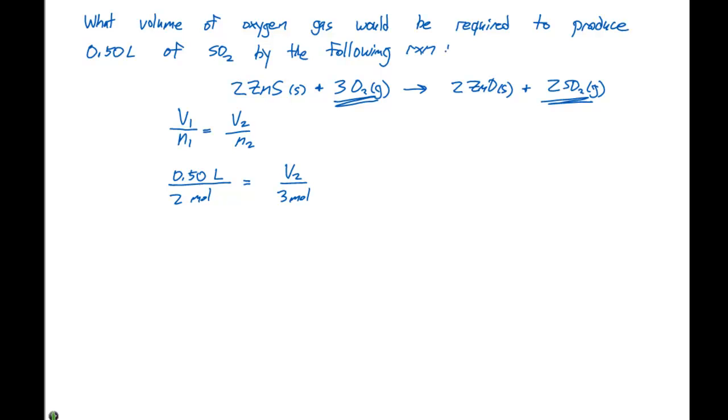We go through here, and we solve for V2, so V2 times two moles is gonna equal 0.50 liters times three moles. If we end up solving for V2, V2 is gonna be 0.50 liters times three moles divided by two moles. Our moles cancel, and our volume that we're looking for would be 0.75 liters.